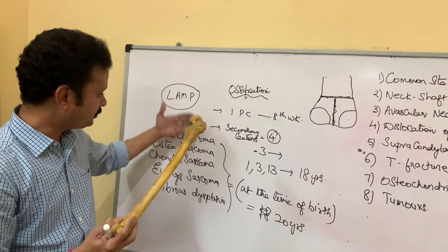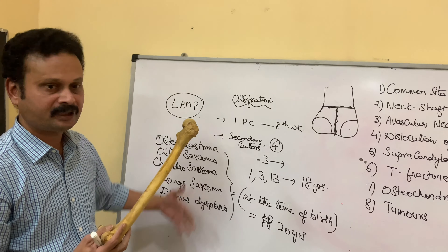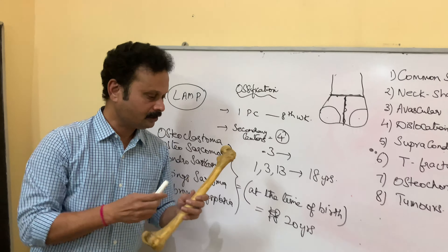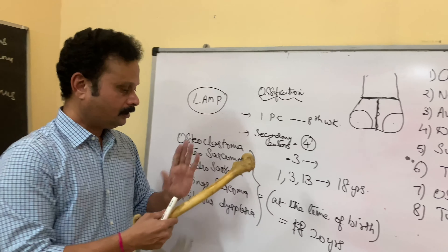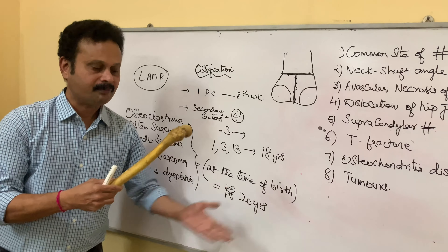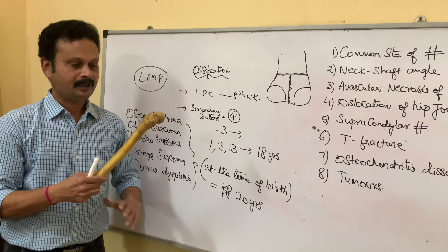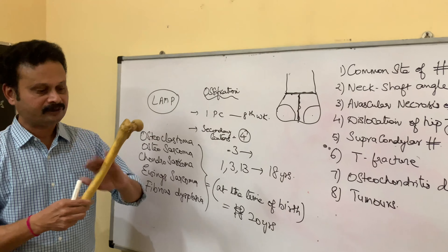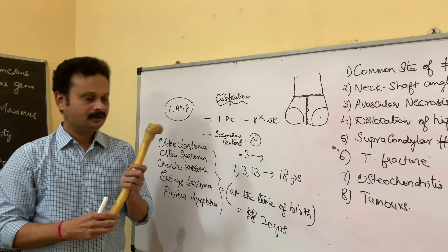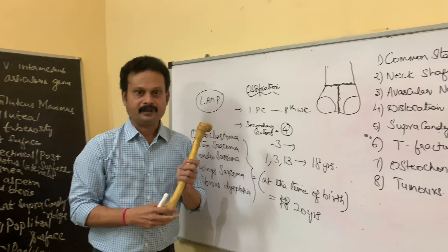These are some of the tumors which can be seen in the femur. This is all about the applied aspect and other features of the shaft and lower end of the femur.